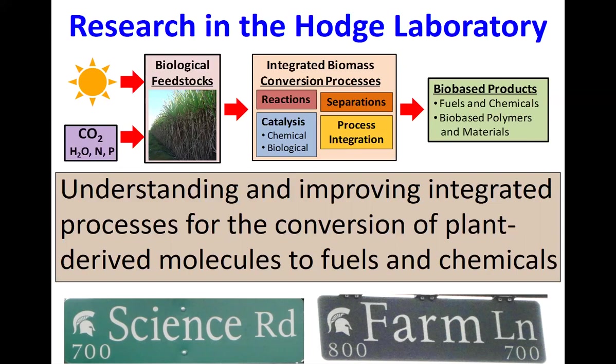As chemical engineers, we like to break everything down into process flow diagrams. What you can see here is the flow of material — energy and carbon into biological feedstocks. My research fits into this block: looking at technologies for conversion of plant biomass. This involves reactions, catalysis, biological and chemical catalysis, separations, and process integration to make bio-based products — renewable fuels, chemicals, and materials. The major theme is understanding and improving integrated processes for plant biomass.